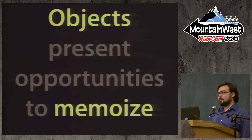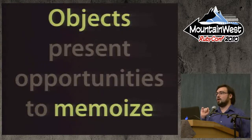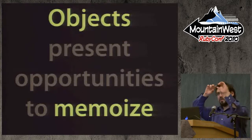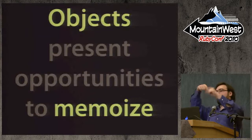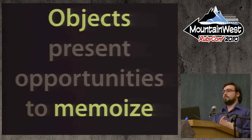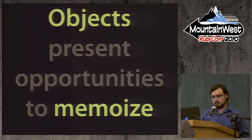The second thing is that objects themselves present good opportunities to memoize. When you have procedural code, it becomes very hard to cache things because you have this huge method and where exactly do you cache it? You have to store it in locals and make sure they have the right state. Objects actually provide very good opportunities to memoize, and I'm going to give a case study here.